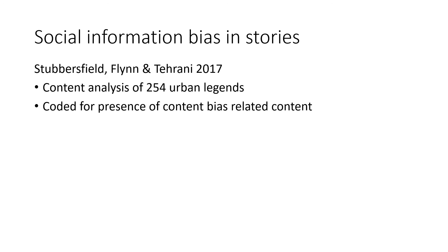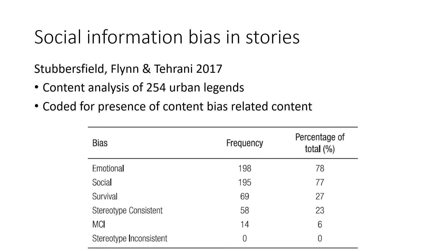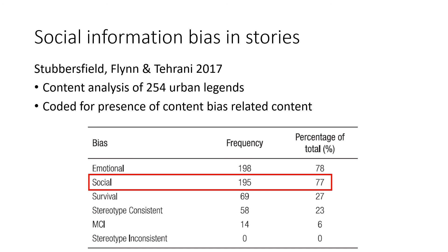When thinking about how content biases might influence the cultural evolution of narratives, it's worth looking at the narratives themselves in the real world as well as just examining them experimentally. So we also conducted a content analysis of 254 urban legends collected from the internet, coded for the presence of content biases and related content. From this content analysis you can see that one of the most frequently coded biases was social information bias — 77% of all the urban legends featured content which exploited this bias for social information, which was much higher than survival information bias or stereotype-consistent content. This suggests that our bias for social information is really shaping the way urban legends evolve and are transmitted.